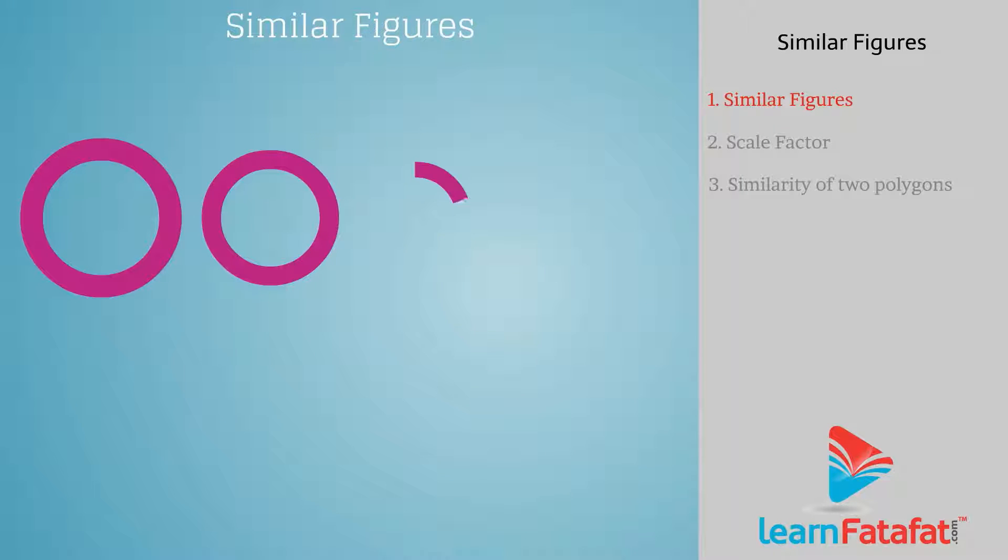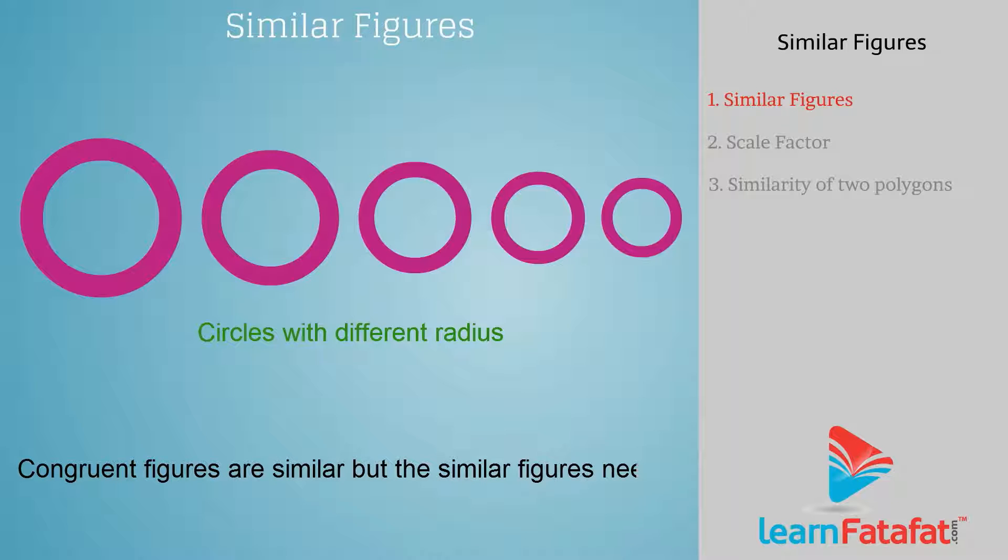Consider circles which are not congruent but they have the same shape, so they are similar. Hence, congruent figures are similar, but similar figures need not be congruent.